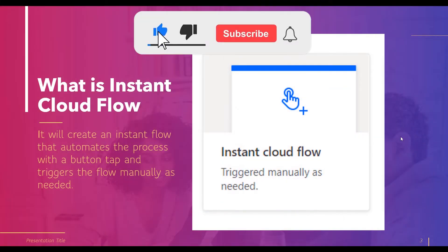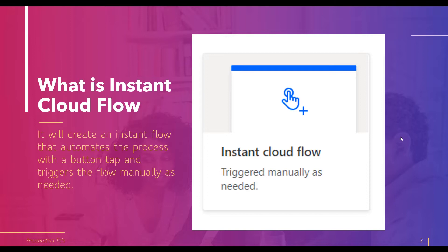First, let's discuss what an instant cloud flow is. As the name suggests, it automates a process with a button tap and triggers the flow manually as needed. It allows the user to use the flow from a mobile app or desktop — for example, creating a reminder to a team or group with a push button from the mobile app. Instant cloud flows are a bit different from automated cloud flows; they are activated manually when a user clicks the flow button. Thus the instant cloud flow is also known as a button flow.